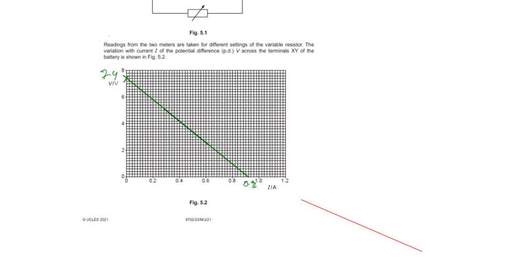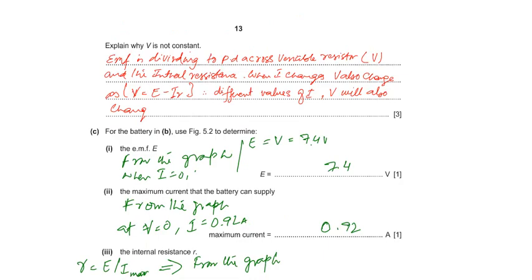Explain why V is not constant. We know the emf is dividing into potential difference across the variable resistance and it also has the internal resistance. Potential difference is also used across the internal resistance. When I is changed, why is I changed? I is changed due to the changing of variable resistance setting. When I is changing, V also changes as V equals emf minus IR. Here you can see if we change the I, we will change the V. For different values of I, V also changes. V is not constant.